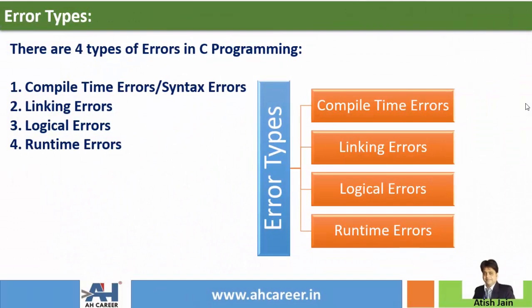There are 4 types of errors in C programming. First one, compile time error, which is also known as syntax error. Second one, linking errors. Third one, logical errors. Fourth one, runtime errors. Now we will try some errors in detail.